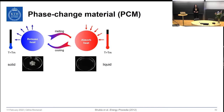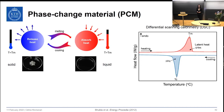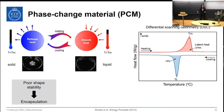The heat storage cycle of these materials can be characterized using differential scanning calorimetry, where the endothermic peak corresponds to the melting of the phase change material and the exothermic peak to the crystallization. The maximum of the peak corresponds to the melting and crystallization point, and the area under the peak corresponds to latent heat, which is the storage capacity of the material. However, one of their main drawbacks is very poor shape stability: when they melt, they tend to leak out and cannot be reused many times. Therefore, it is needed to encapsulate them within a supporting medium.